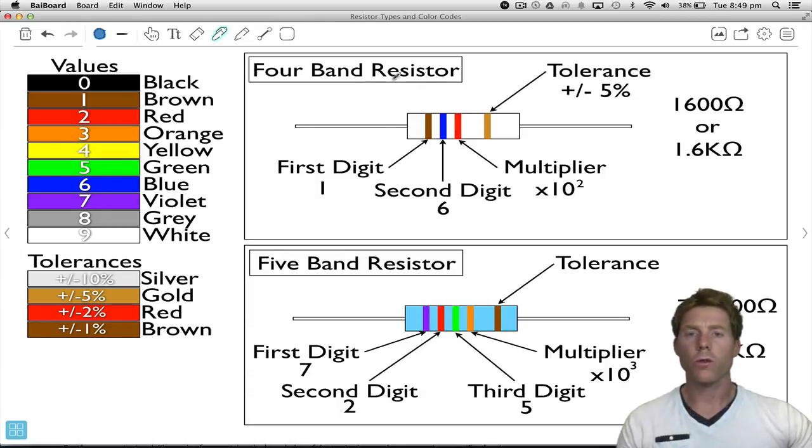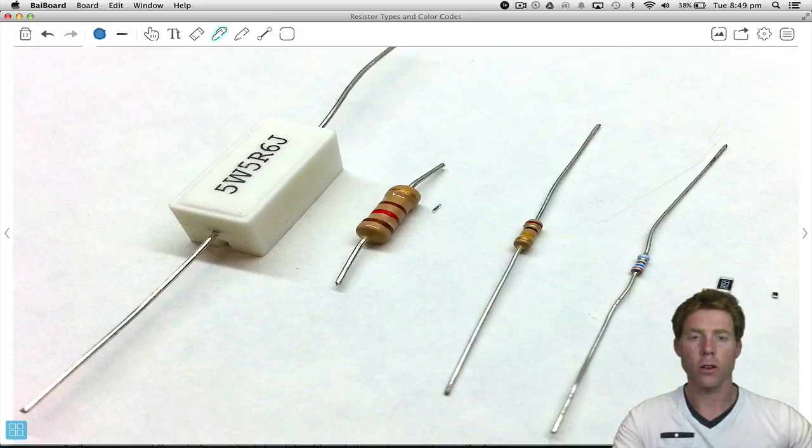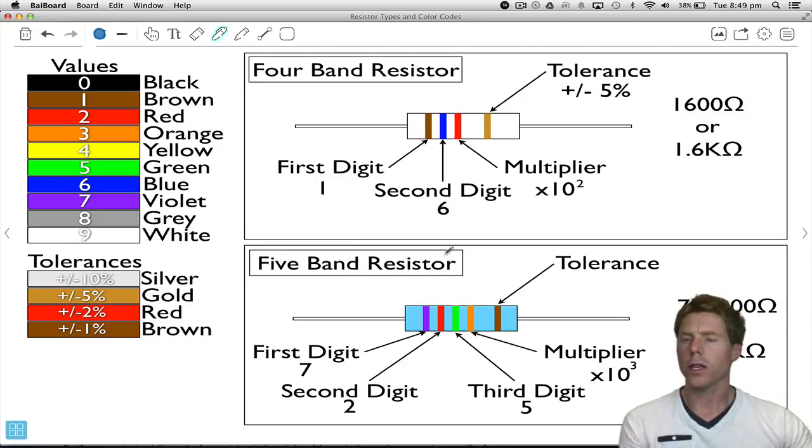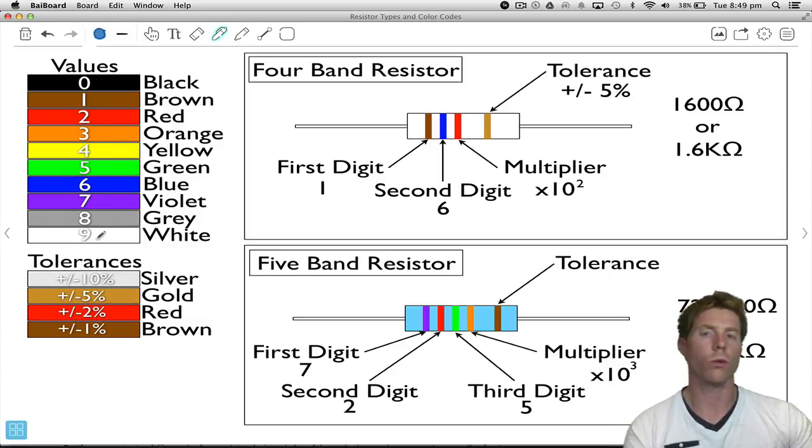Now, I've given both the four-band resistor conversion chart, and also the five-band. All of these resistors here, you see, are four bands. They've got four colors. So what do the colors mean? Well, over here, we've got ten different numbers, and ten different colors, starting from black, which is zero, all the way through to white, which is nine.